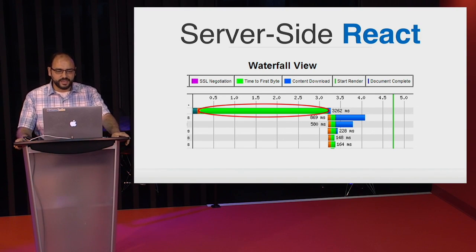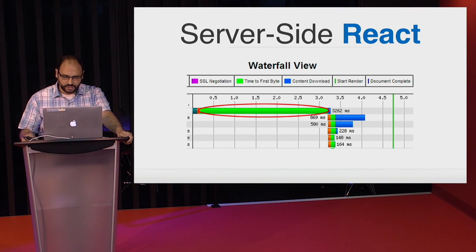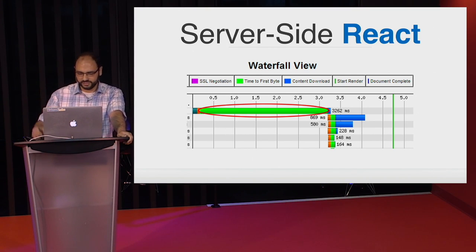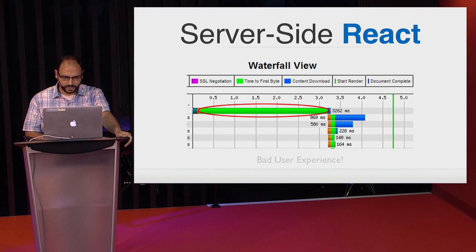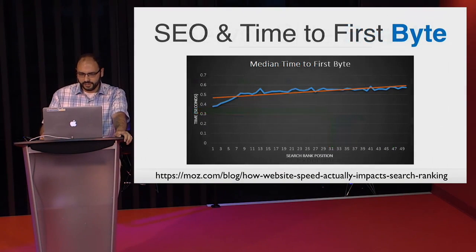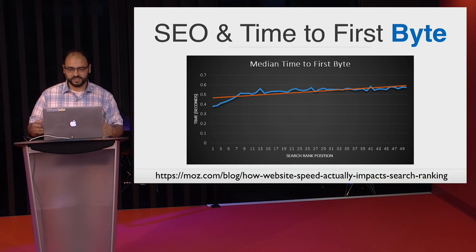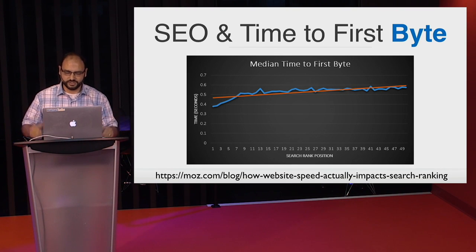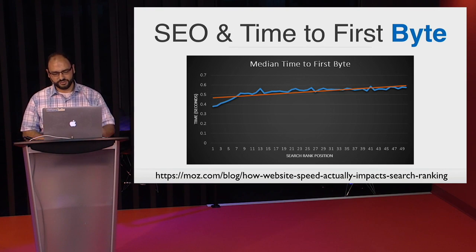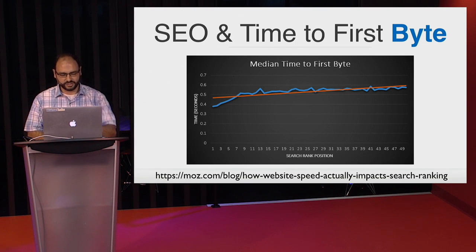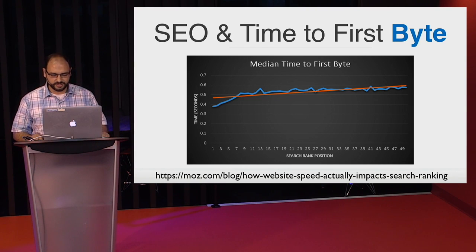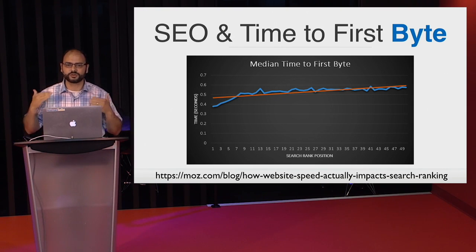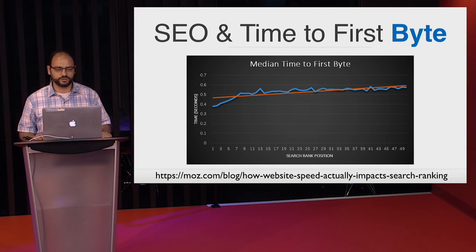One of the issues we saw with React was that running React on the server caused the time to first byte to be significantly high compared to our legacy sites. We saw a three-second time from the browser for even the first byte to come from the server — a really bad user experience. More importantly, it's bad for the business because studies show that as you increase your time to first byte, your ranking on Google gets worse. There's a strong correlation between time to first byte and SEO ranking.